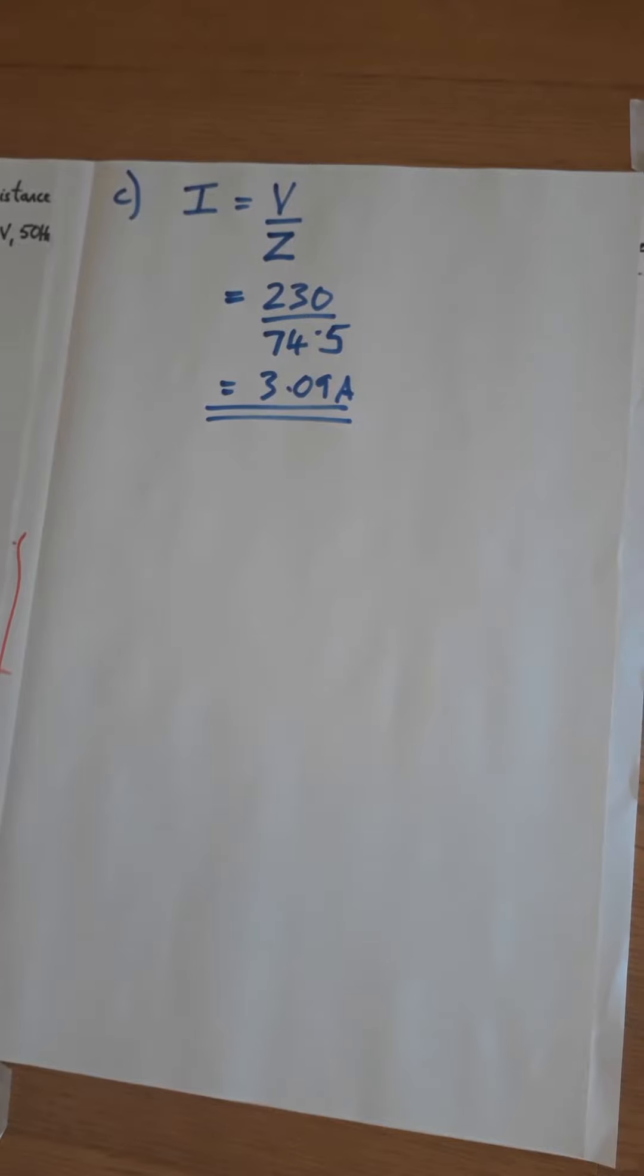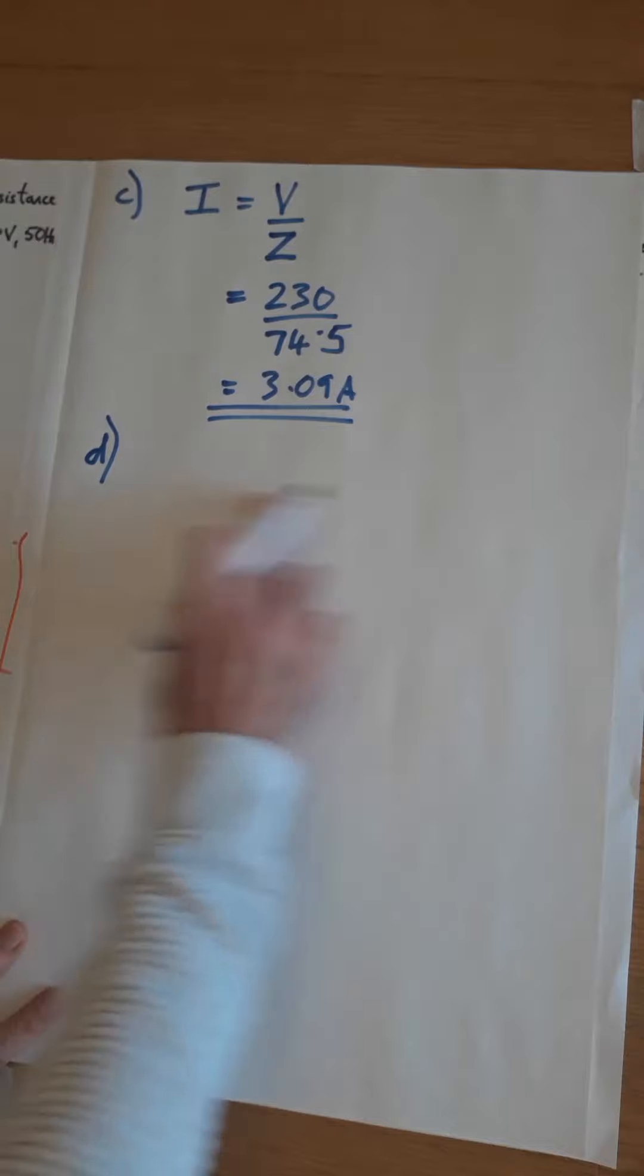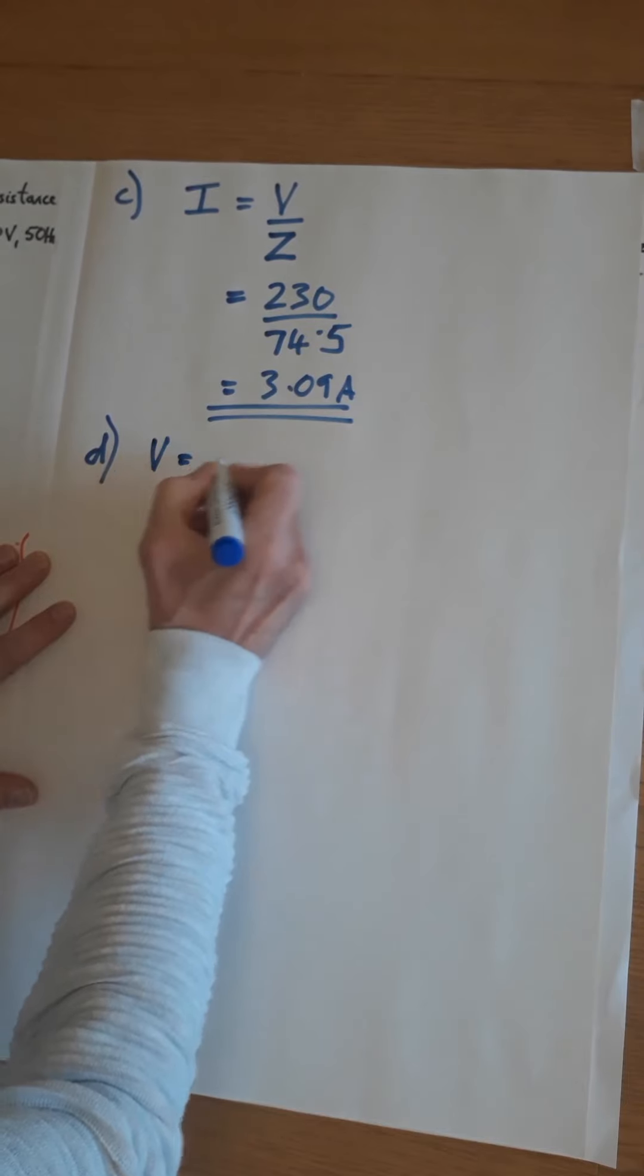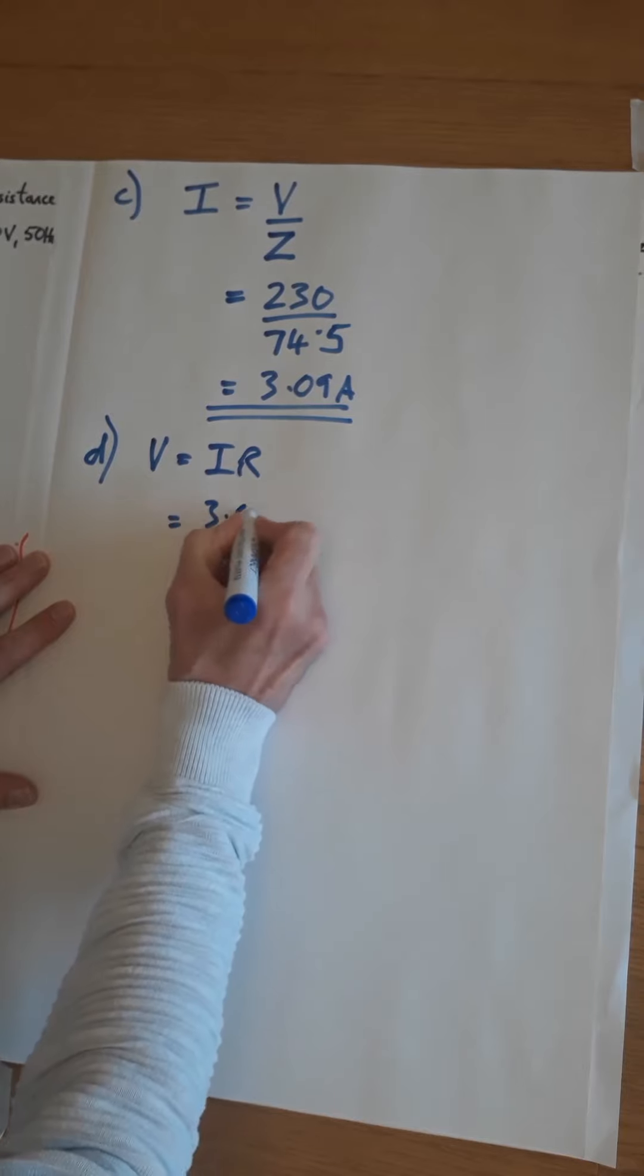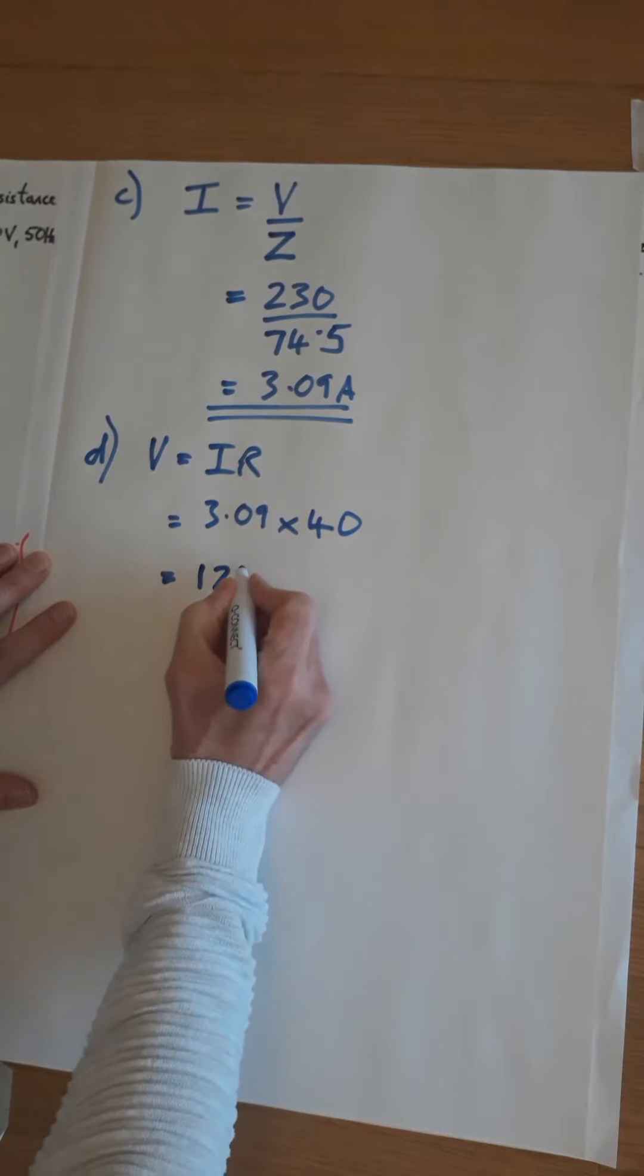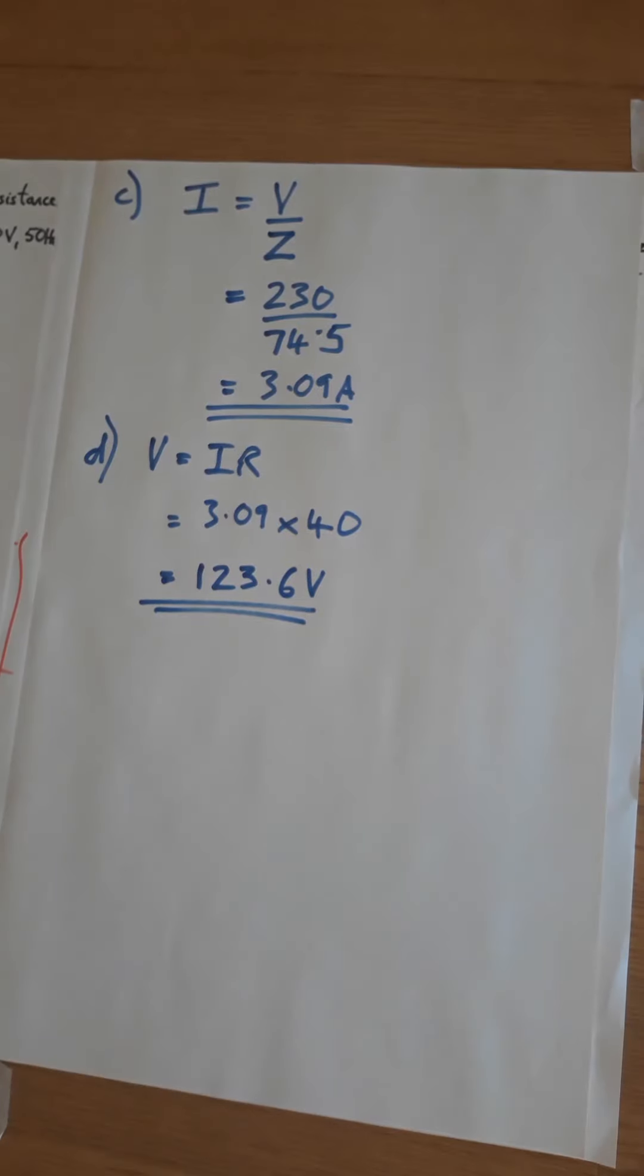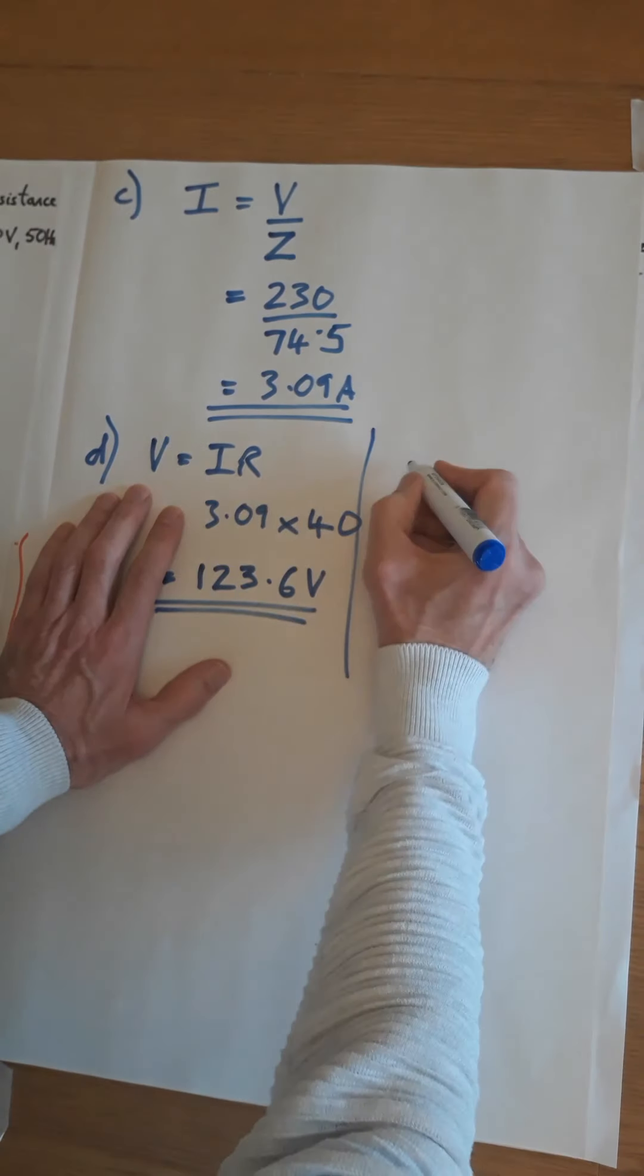Next step, the potential difference across the resistor. So voltage across the resistor, V equals IR: 3.09 times 40, and that equals 123.6 volts.